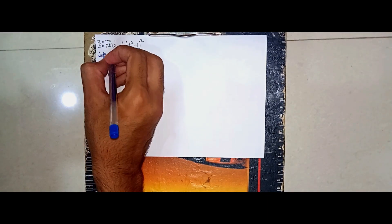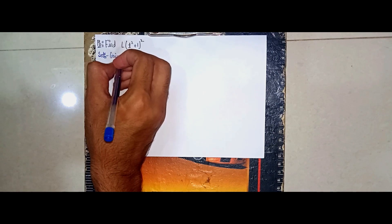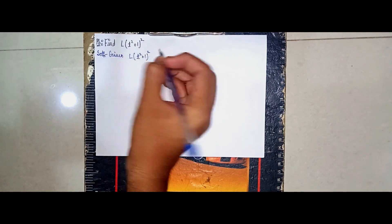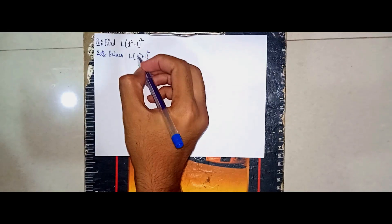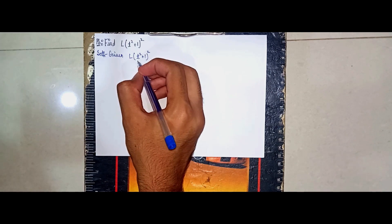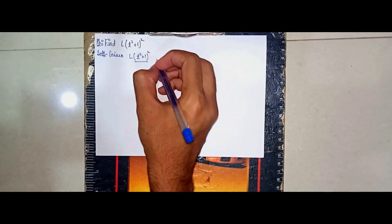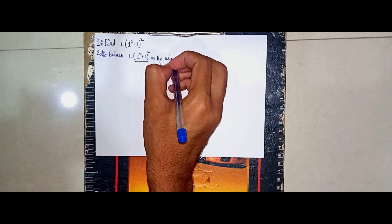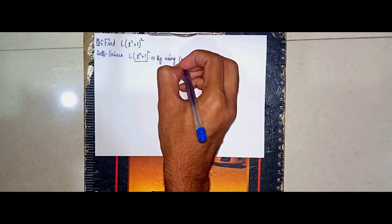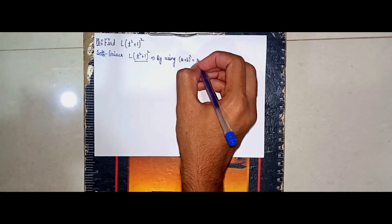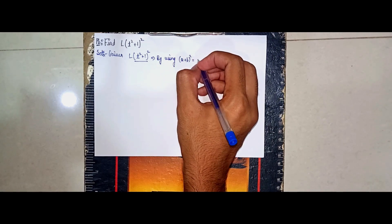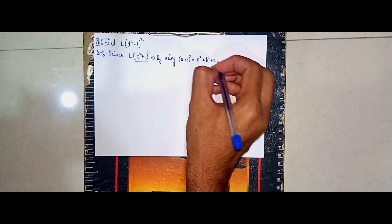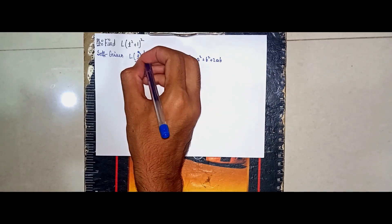Write given: Laplace of (t² + 1)². We can't directly apply the Laplace formula here, so I'm using algebra — specifically the (a + b)² formula, which is a basic algebra formula. It expands to a² + b² + 2ab.